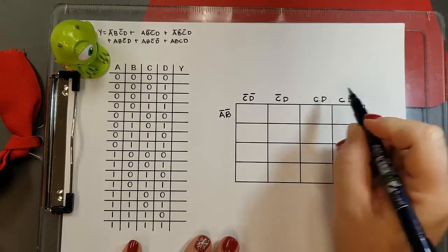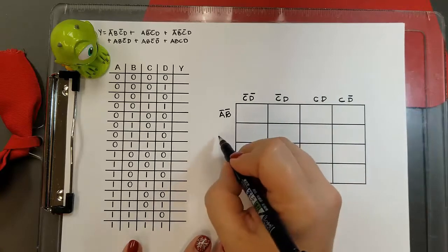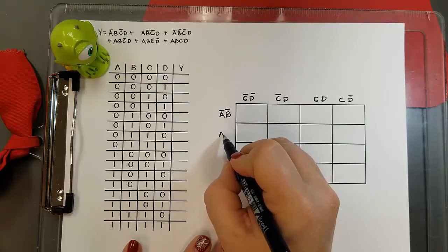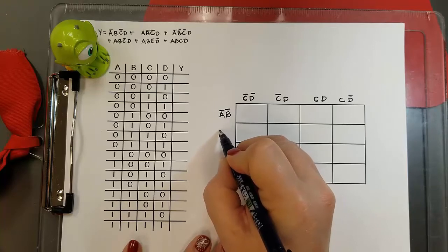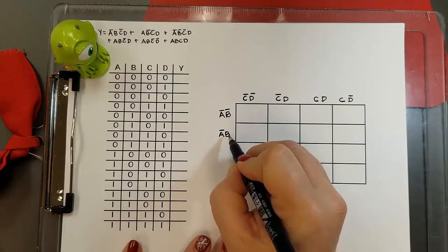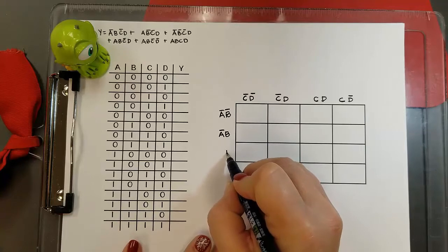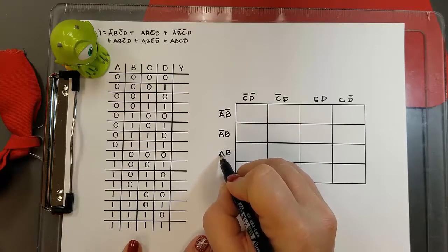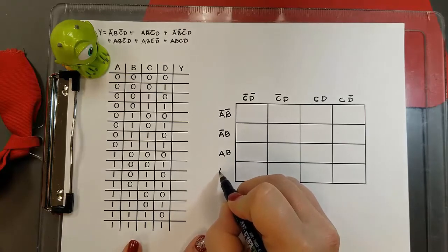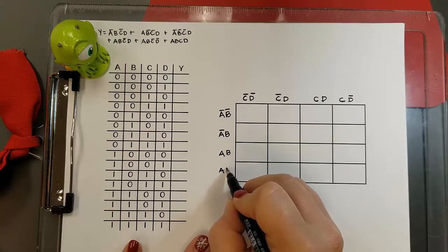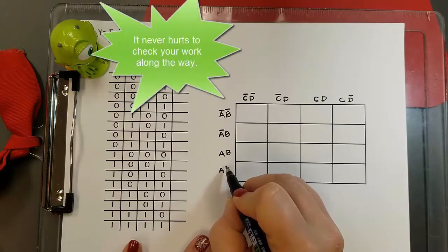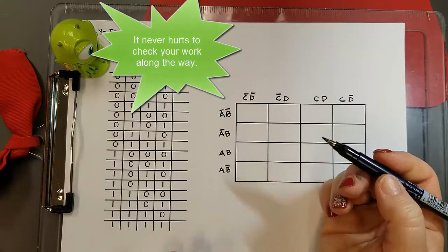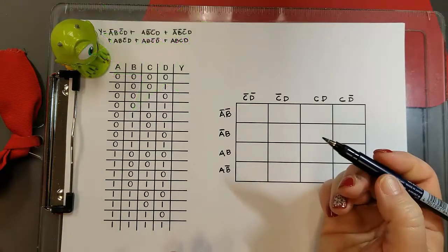I do the same thing going down, and I can only change one term every time I move. So I have not A B. Now I'm going to keep B the same and change A, so that'll be A. And then we have A not B. Now one of the important things to do is to check and be sure as I move from the last to the first, only one term changes.